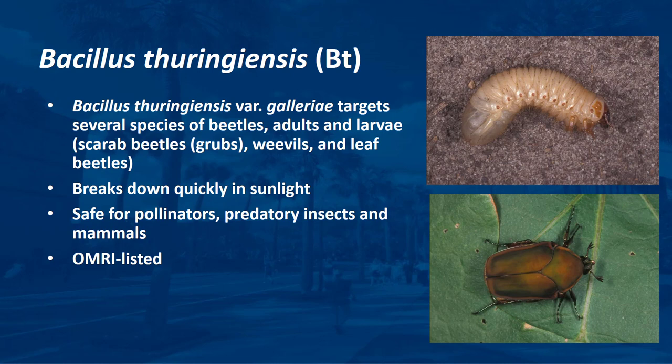Another strain of Bt, Bt galleriae (Btg), targets several species of beetles in the adult and larval stages, including scarab beetles, weevils, and leaf beetles. Btg is not toxic to bees or butterflies, but applications should be avoided where predatory beetles are active. While a Bt strain works well for its target pests, it also breaks down quickly in sunlight, becoming ineffective after a few days. This makes Bt very safe for pollinators, predatory insects, and mammals. Bt can be sprayed even when bees or butterflies are present. Many Bt products are OMRI listed.